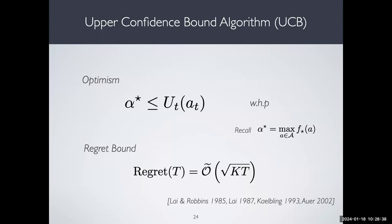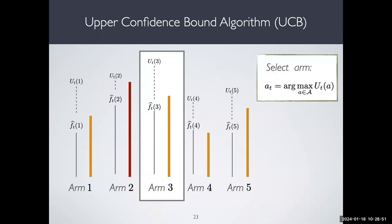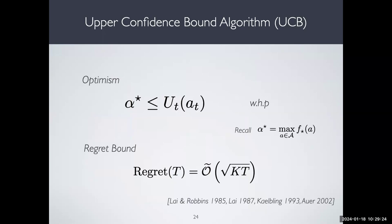This algorithm is called optimistic because the value of u-t at the arm that was pulled always exceeds the optimal arm value. The u-t value is always bigger than the mean reward for that arm. So u-t of a-t is bigger than u-t of a-star, which in turn is bigger than the mean value of a-star. That's what optimism means: the estimation of the arm I'm selecting is bigger than the optimal reward value. This gives a regret bound of square root K·T.